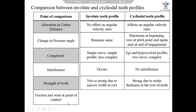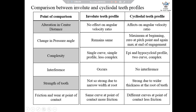The sixth and last point is friction and wear at the point of contact. In case of involute profiles, similar surfaces come in contact with each other on meshing gear teeth. However, in case of cycloidal profile, an epicycloid comes in contact with a hypocycloid and vice versa. Due to the different surface areas in contact, wear at the point of contact is less in case of cycloidal teeth profile compared to involute. With this, we complete the comparison between involute and cycloidal teeth profiles.